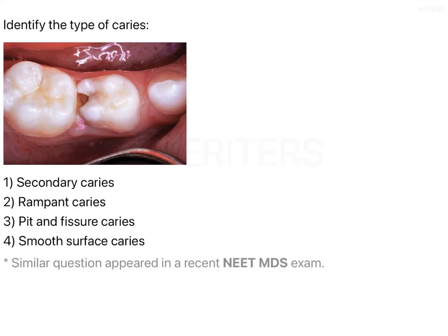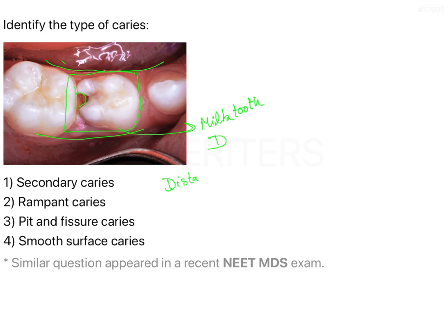To identify the types of caries, if you see this particular figure, you must be able to understand — this is a primary molar, a milk tooth, labeled D, and it is from the lower arch. The proximal interdental area here corresponds to the distal surface of this primary first molar. Now, if you look further, this tooth looks quite healthy, and even this canine looks quite healthy.